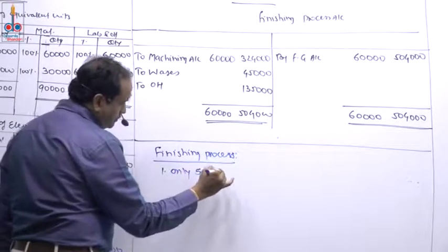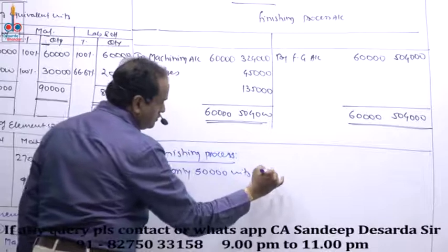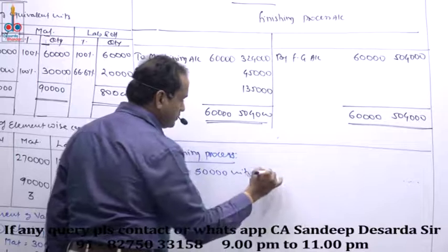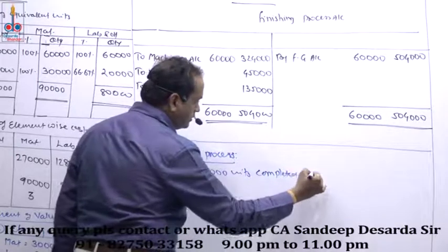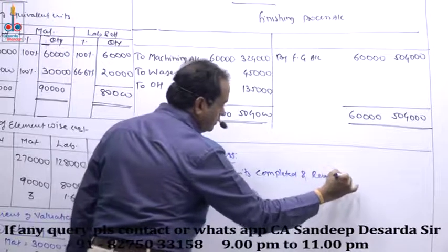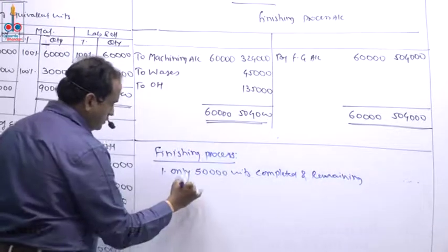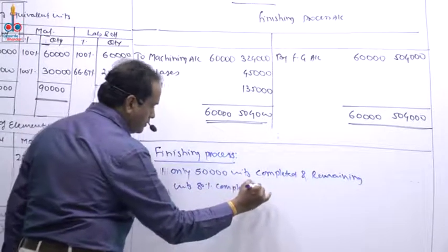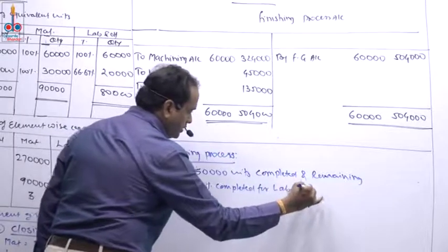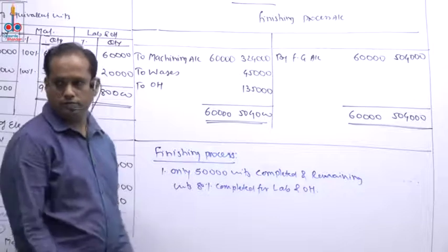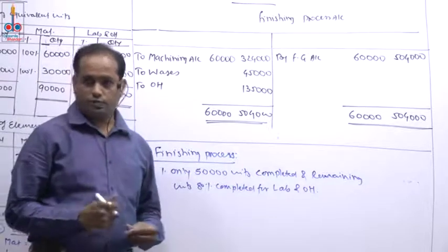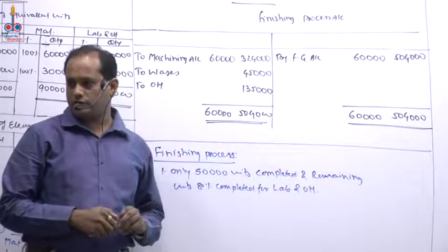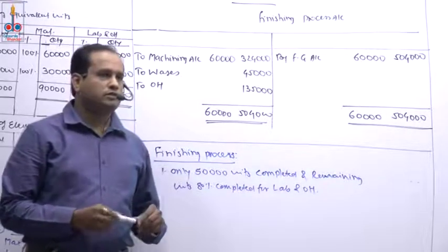Next problem preview: Only 50,000 units transferred to finished goods, i.e., 50,000 units completed. Remaining units are 80% completed for labour and overheads. Statement of equivalent units — in this case, what does it do?